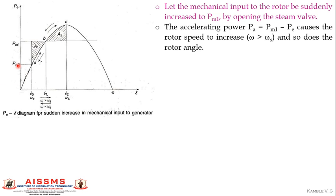Since Pm1 is greater than Pe, there is positive accelerating power or accelerating torque. Due to this accelerating torque, the rotor accelerates from point A to point B in the forward direction. While accelerating from A to B, the rotor gains kinetic energy, and this kinetic energy gained during the accelerating period is indicated by area A1.